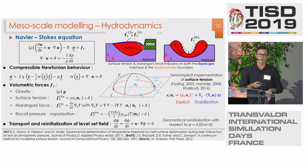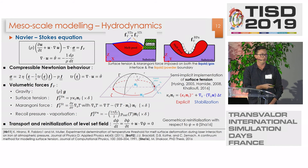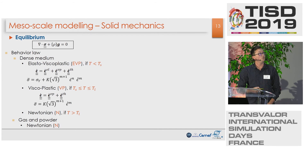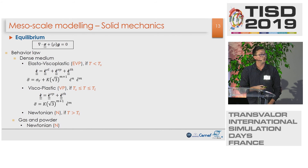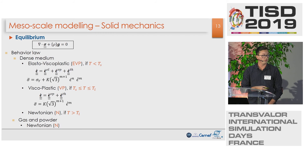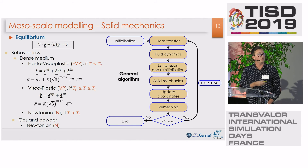We take vaporization into account with a recoil pressure force that will tend to be in opposition with the surface tension one. Because we solve it with the level set method, we have to track the interface by solving a transport equation after the Navier-Stokes. To take into account the solid mechanics, we solve the equilibrium equation, considering an elasto-viscoplastic model for the solid part, a viscoplastic model in the mushy zone, and a Newtonian model for the remaining parts.